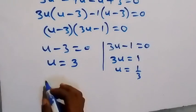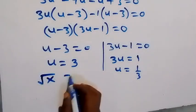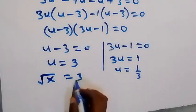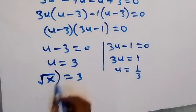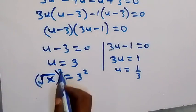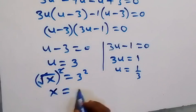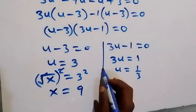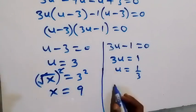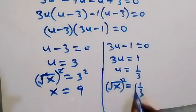Recalling that u = √x, we substitute back. For u = 3: √x = 3. Squaring both sides, the square root cancels, giving x = 9.